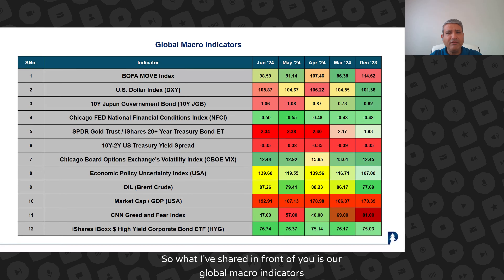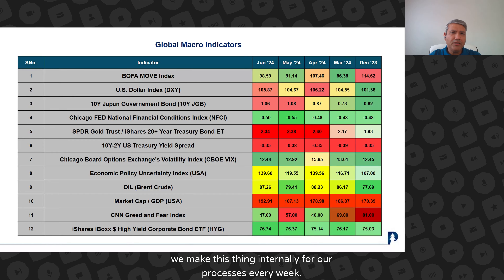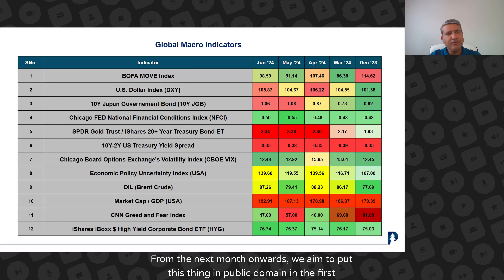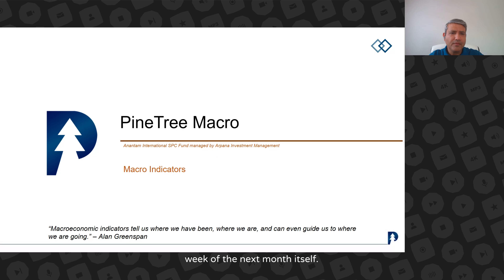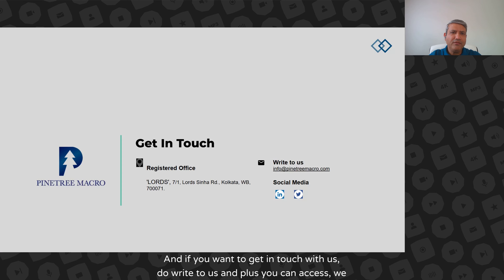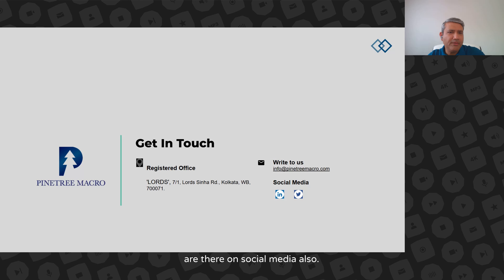So what I've shared with you is our global macro indicators dashboard. We make this internally for our processes every week. This is the first time we are putting it in a public domain, but on a monthly basis. From next month onwards, we aim to put this in the public domain in the first week of the next month itself. If you want to get in touch with us, do write to us — and you can also access us on social media.